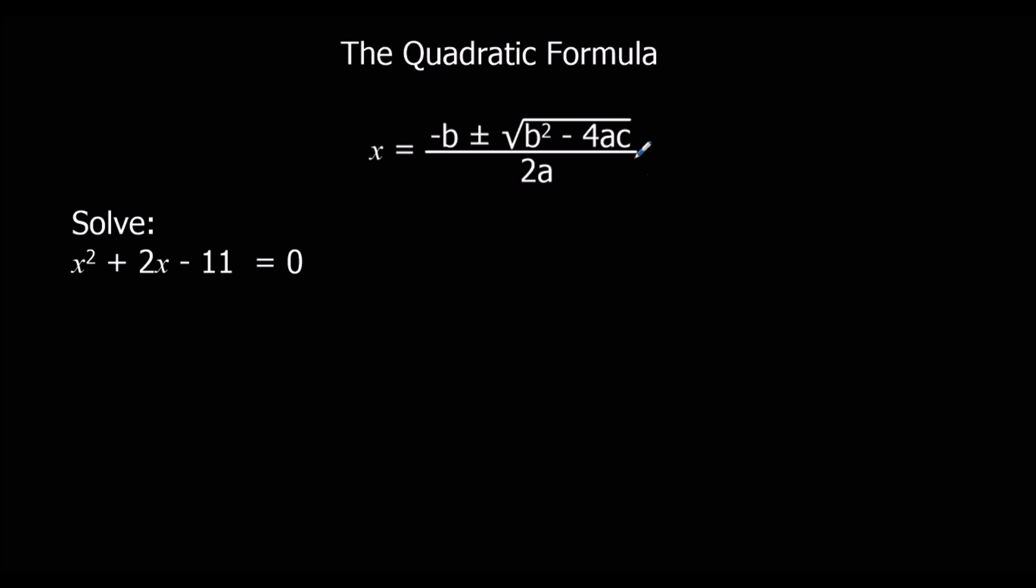So the first thing is, what do they mean? What does a, b and c mean? So when something's written in the form with x squared first, then x, then the number. So as long as we've got that form, a is the first number, b is the second number, and c is the third number.